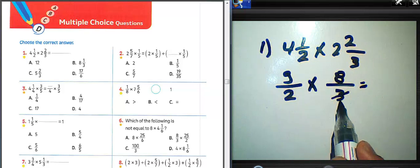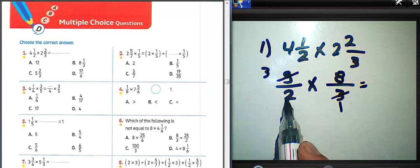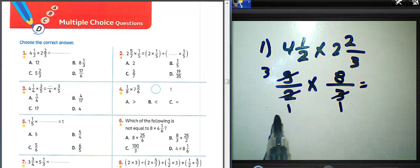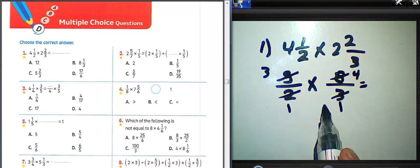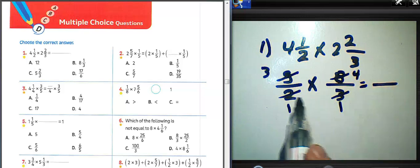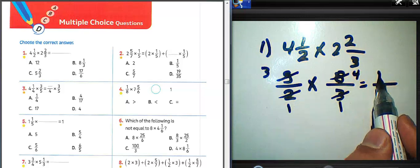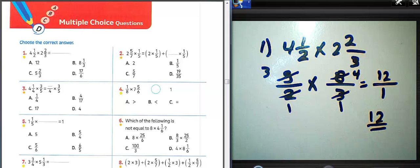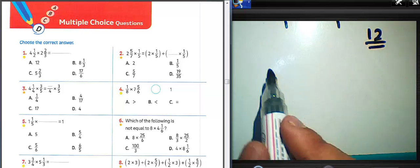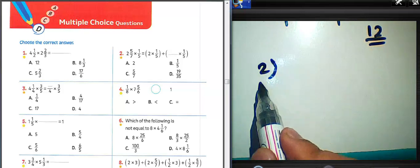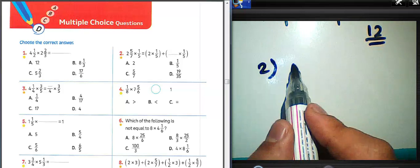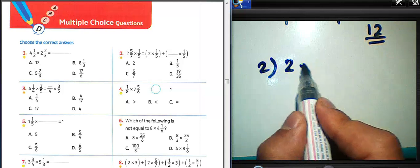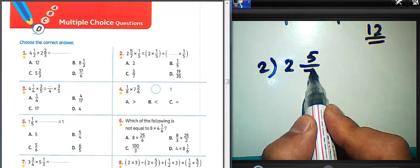Then we can simplify: three divided by three equals one, nine divided by three equals three, two divided by two equals one, eight divided by two equals four. Then three times four equals twelve, twelve divided by one equals twelve. So the result of question number one equals twelve.